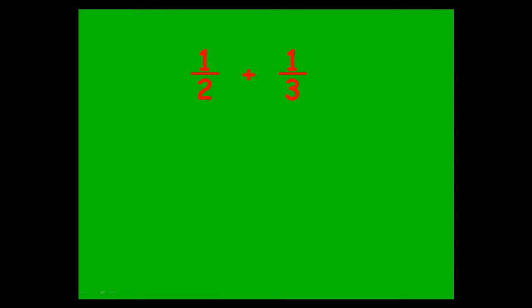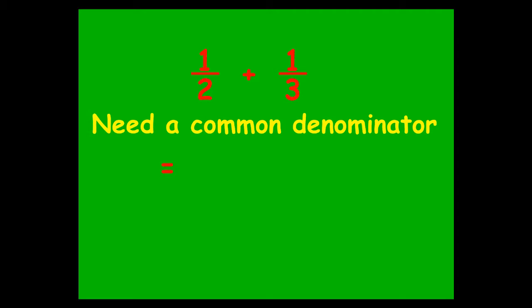A half plus a third — we have a problem because these fractions belong to different families; they have different denominators. One is over two, the other is over three. So what you have to do is come up with a common denominator. One of the easiest ways to do that is to multiply the two denominators together — that way you know you've got a number into which they both will go. So two times three is six, and you write each fraction as something over six.